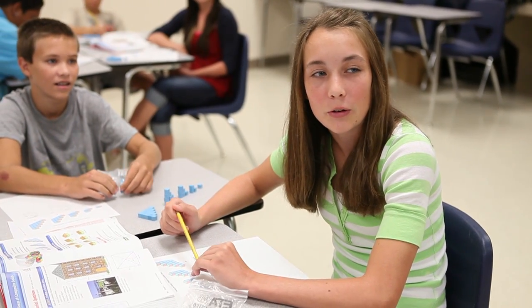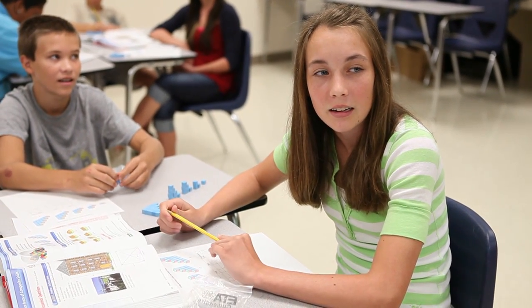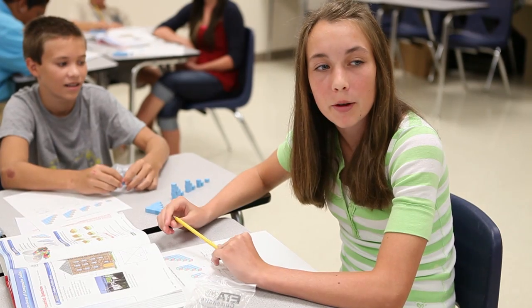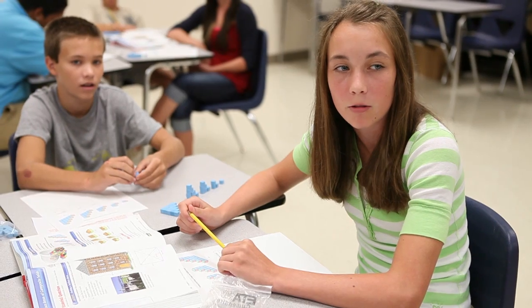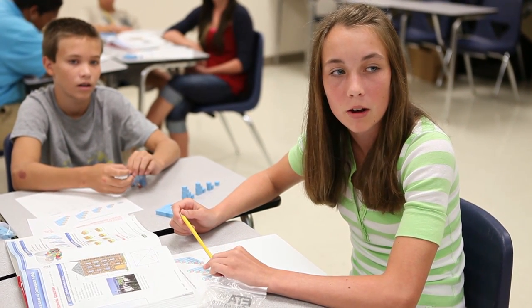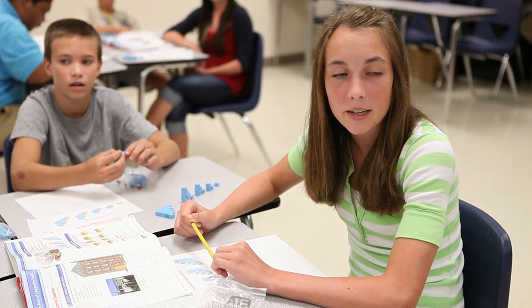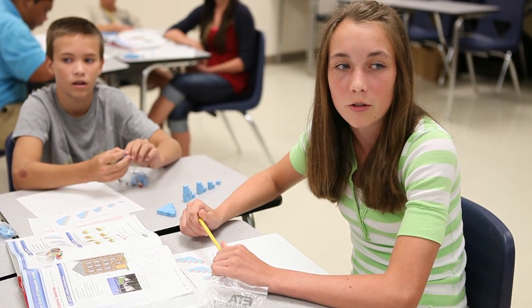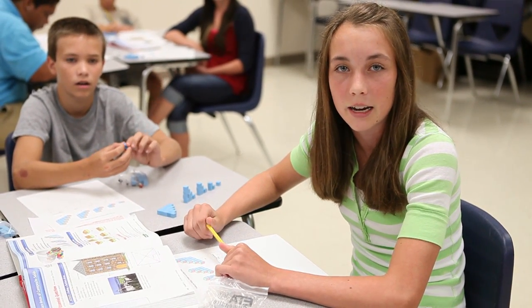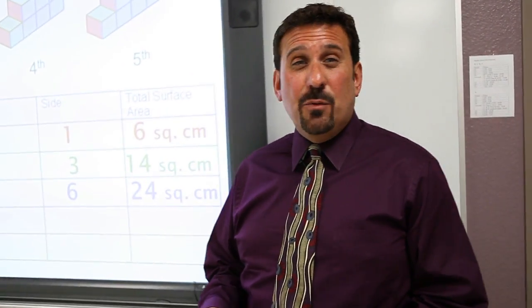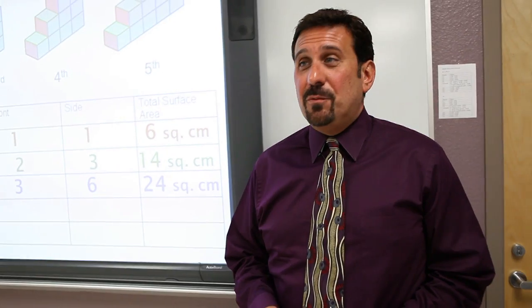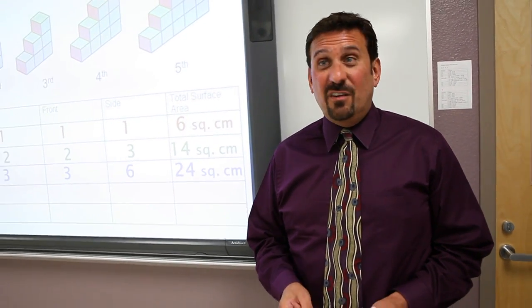I heard you guys were talking about another pattern. On the first one it would be one times six equals six. The second one would be two times seven equals fourteen. The next one would be three times eight equals twenty-four. So you could do four times nine, and then five times ten to get the next ones. So using some multiplication in there as well. I love how you were really working with those cubes to come up with those solutions for this surface area. Great job, class.